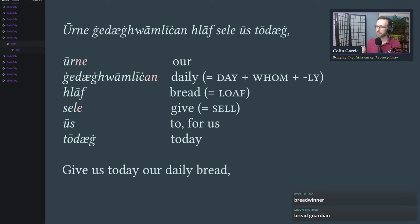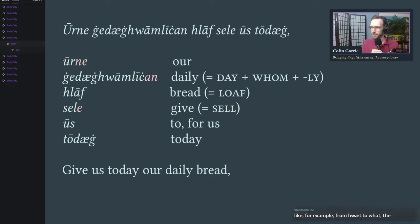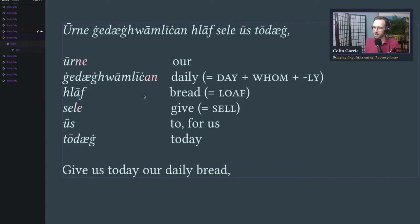'Sele' comes from the verb 'sellan,' which means not 'to sell' but 'to give.' So the original meaning of this verb — which comes down into modern English as 'sell' — was 'give,' or sometimes 'to betray someone,' like calling someone a sellout. This is a very old meaning of the word 'sell,' which meant just neutrally 'to give' or 'to give someone over,' as in to betray them. Here there's no connotation of betrayal; it just means 'give.' So 'sele us' — 'give us our daily bread.' 'Us' is another form of the first person plural pronoun.